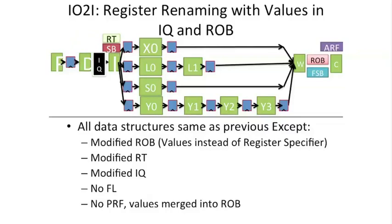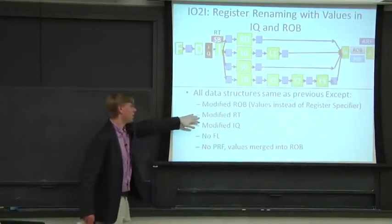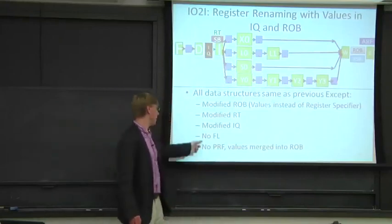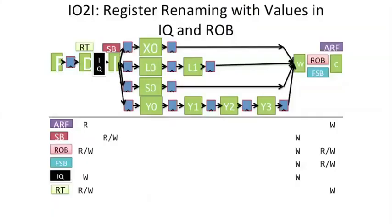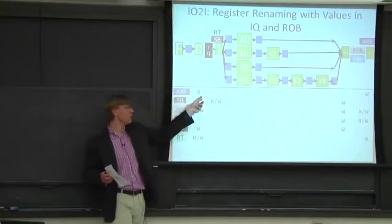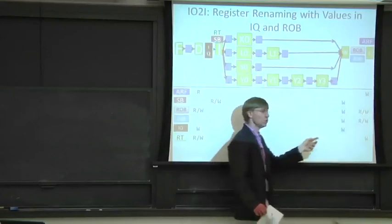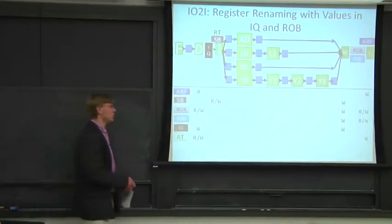We're going to have to modify a bunch of stuff here. We're going to actually keep values in our reorder buffer instead of a pointer. Our renaming table is going to be modified. Our instruction queue is now going to be able to keep track of actual data values. And our physical register file has gotten merged into our reorder buffer. One notable change: the architectural register file, which in previous architectures was only written — we didn't do reading of it except on rollback — we now actually read from it, because we might need to go find some canonical state there.